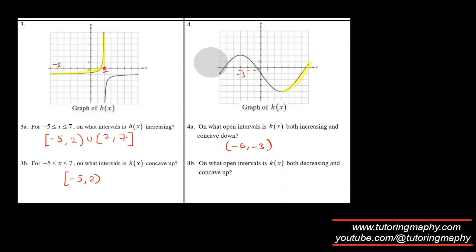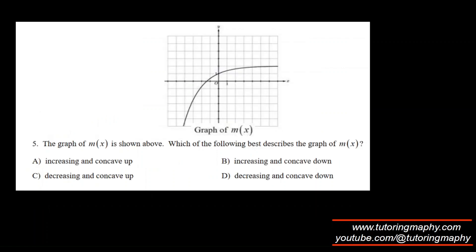Now for decreasing and concave up: decreasing is the remaining portion we didn't highlight. The frowning face section is concave down, and the smiling face section is concave up. So the interval where the function is both decreasing and concave up is from zero to 3.